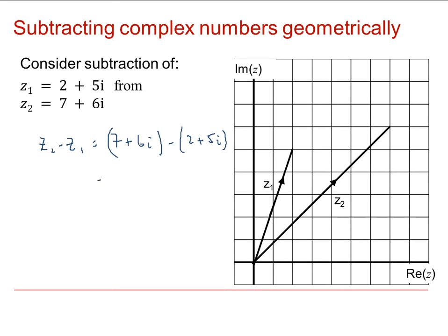This gives us a result which is 5 for the real part, and then 6i minus 5i gives us plus i. So the result is at 5, 1, which is at this point here.